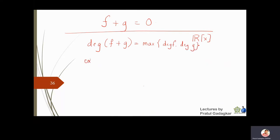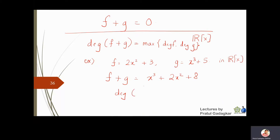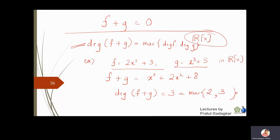With polynomials over real coefficients in R[x], we usually expect degree(f+g) = max(degree(f), degree(g)). For example, f(x) = 2x^2 + 3 and g(x) = x^3 + 5: f + g = x^3 + 2x^2 + 8, which has degree 3 — the maximum of 2 and 3. Be careful: results expected in R[x] need not hold in a general polynomial ring.